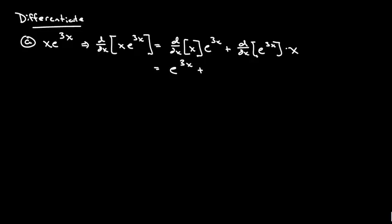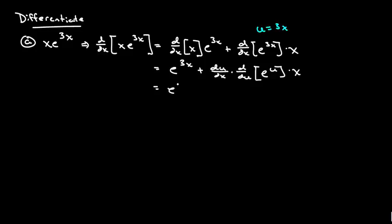For this guy right here we've got plus — now the derivative of this we're going to use the chain rule. So let's let u be equal to 3x. So the d/dx will be replaced with du/dx times d/du of e to the u. This is e to the 3x plus — du/dx we get up here — the rate of change of u with respect to x is 3. And d/du of e to the u is just e to the u times x. So this will be e to the 3x plus 3x times e to the 3x.